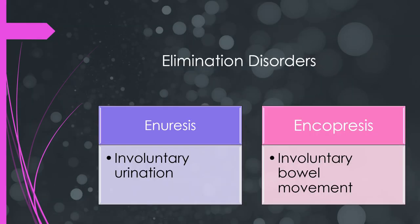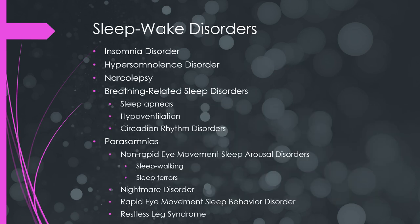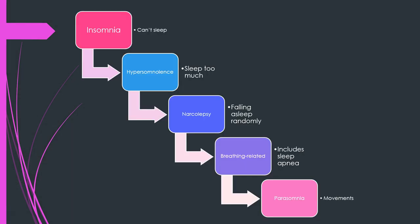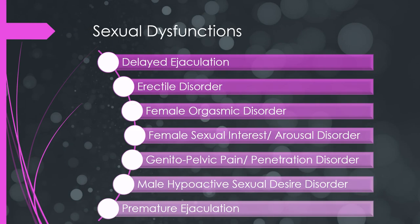There are two elimination disorders: enuresis and encopresis — basically involuntary urination or involuntary bowel movement. Sleep-wake disorders include insomnia, hypersomnolence (sleeping too much), narcolepsy (suddenly falling asleep), breathing-related disorders including sleep apnea, and parasomnias involving movements like sleepwalking.